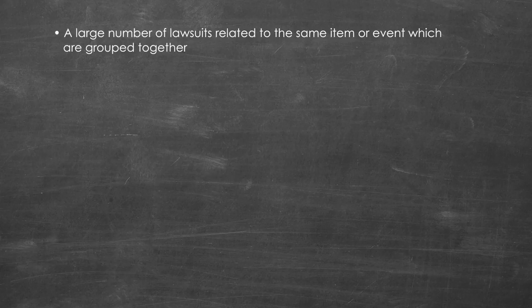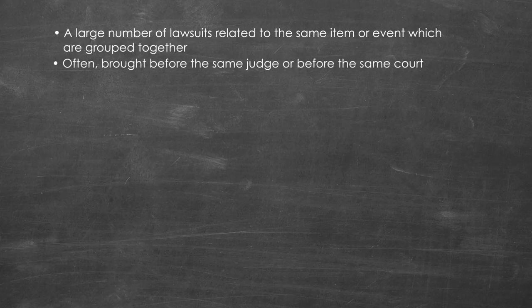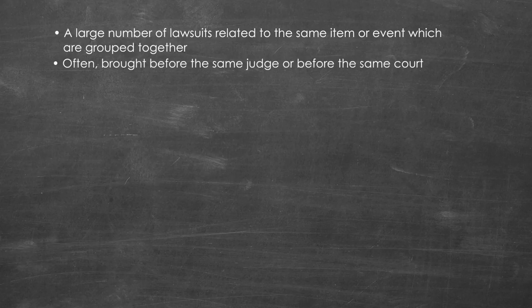So what is a mass tort case? A mass tort case refers to a large number of lawsuits related to the same item or event that are grouped together. Often, these cases are brought before the same judge or before the same court in a particular region because they are similar claims involving the same consumer product, prescription drug, or common event. These cases may involve hundreds or thousands of people with similar injuries throughout the country settling their cases on a mass or consolidated basis.